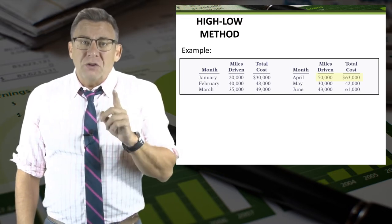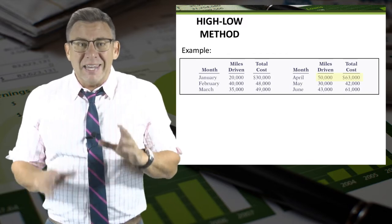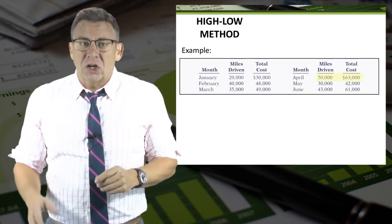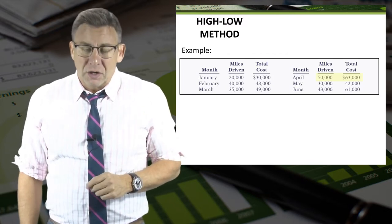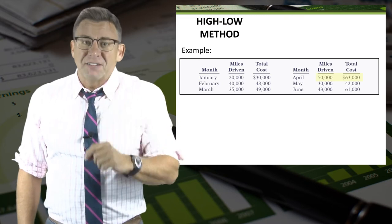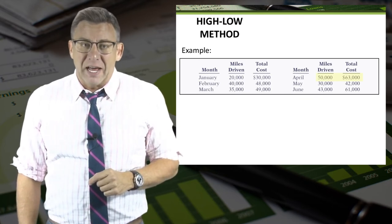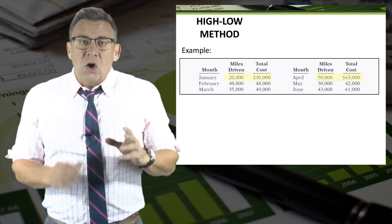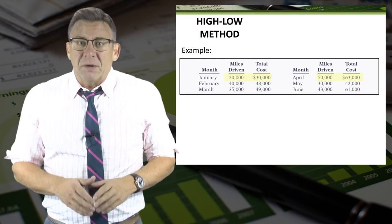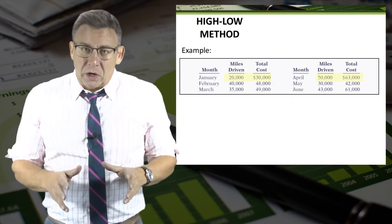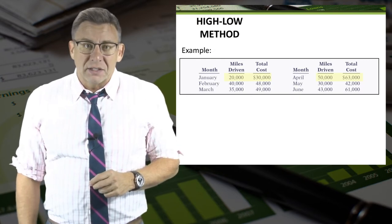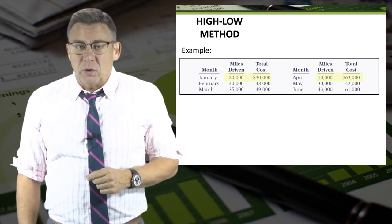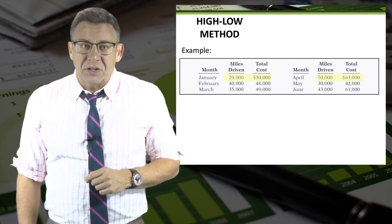We would use $63,000 as the high cost even if there was a month with a larger dollar amount. Remember, it's volume that determines high and low. The low level of volume is January at 20,000 miles, and the cost for January is $30,000.